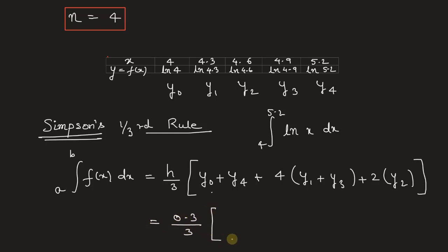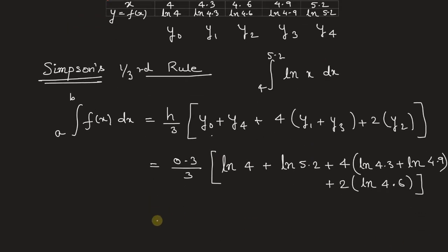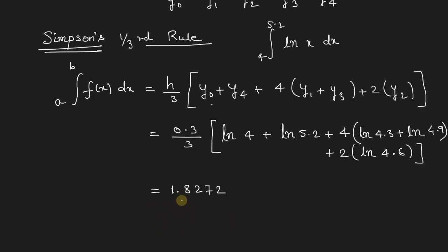This is the value we will get after substituting y₀, y₁, y₂, y₃, and y₄ into Simpson's one-third integral formula. Upon calculation, we will get the value 1.8272.